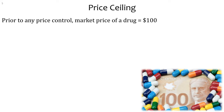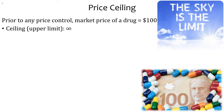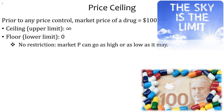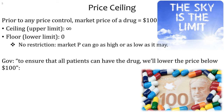To understand the logic behind price controls, imagine a pharmaceutical drug with a market price of $100. Without any price control, the price can be anything — the ceiling is infinite and the floor is zero. What determines the price is the interaction of buyers and sellers based on willingness to pay and the cost of sellers. The government comes in and says: to ensure all patients can have the drug, we'll lower the price below $100. The intention is good — we want everyone, including poor people, to afford the medicine.